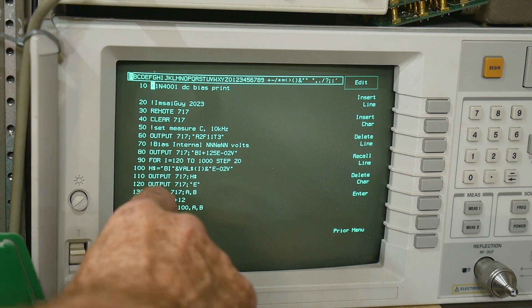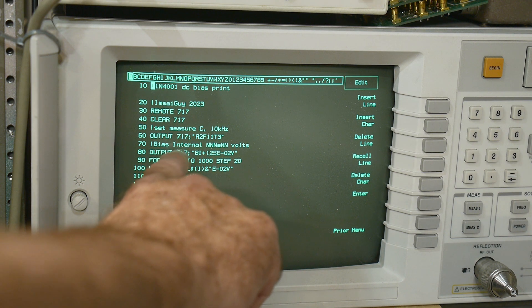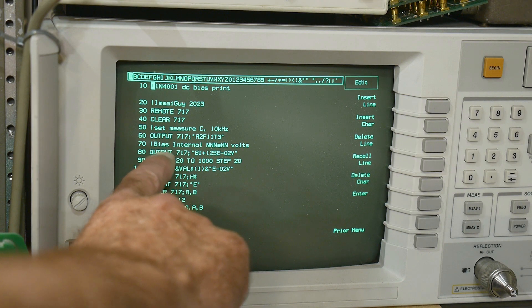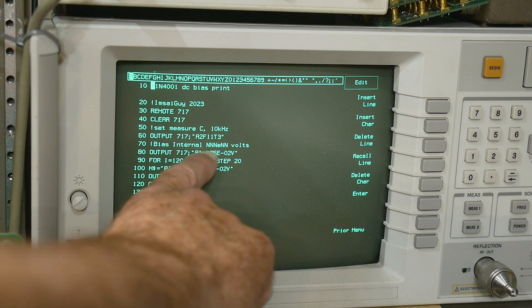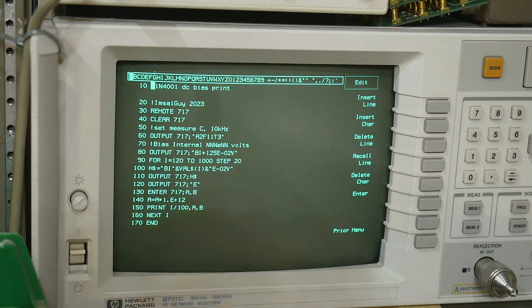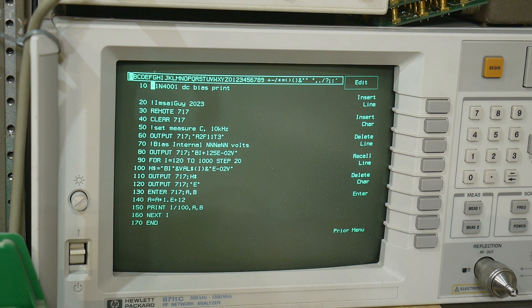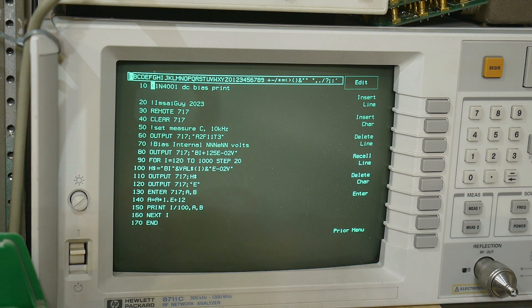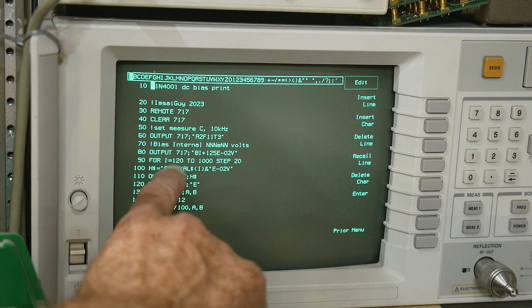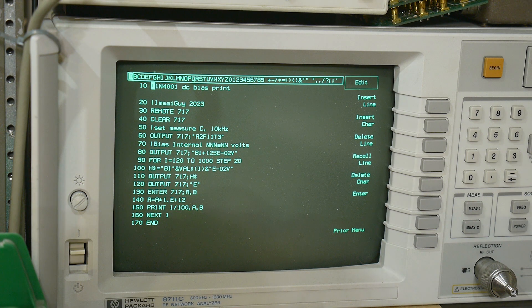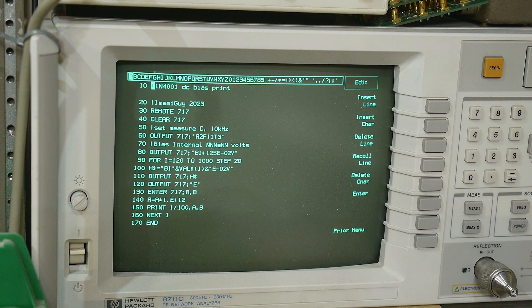And then we can output an actual bias. And so you say BI, and then you give a three-digit exponent two-digit. So I'm going to have a for-next loop, and I'm going to go between 1.2 volts and 10 volts in 0.2-volt steps. And, yeah, there you go.